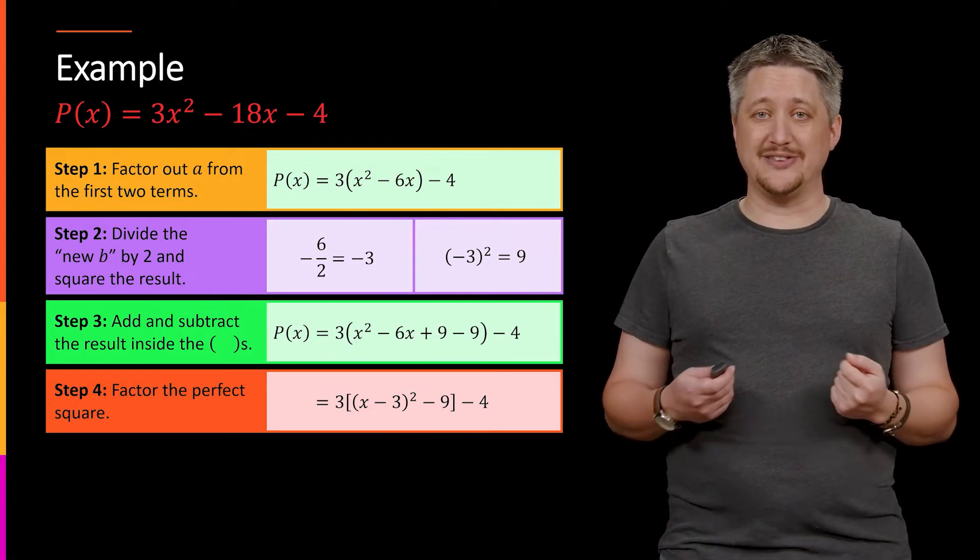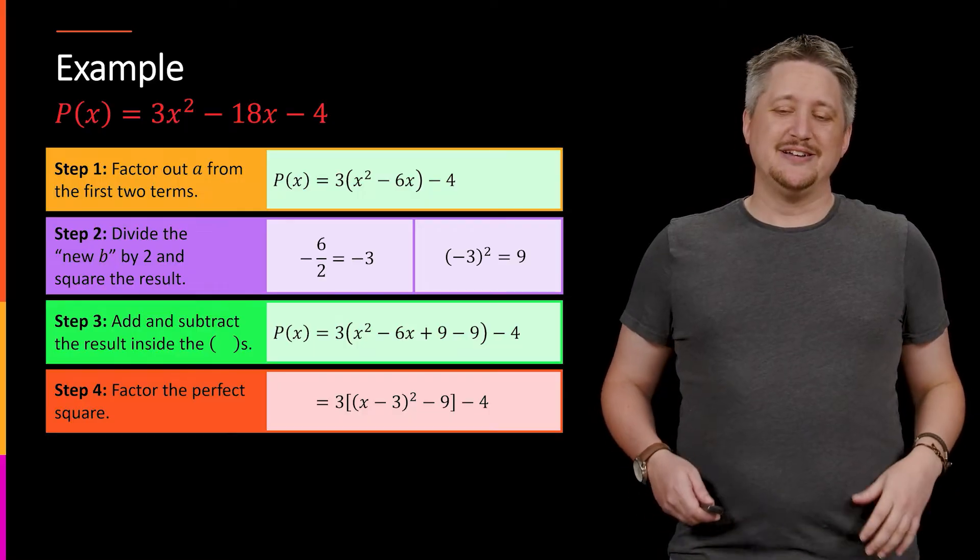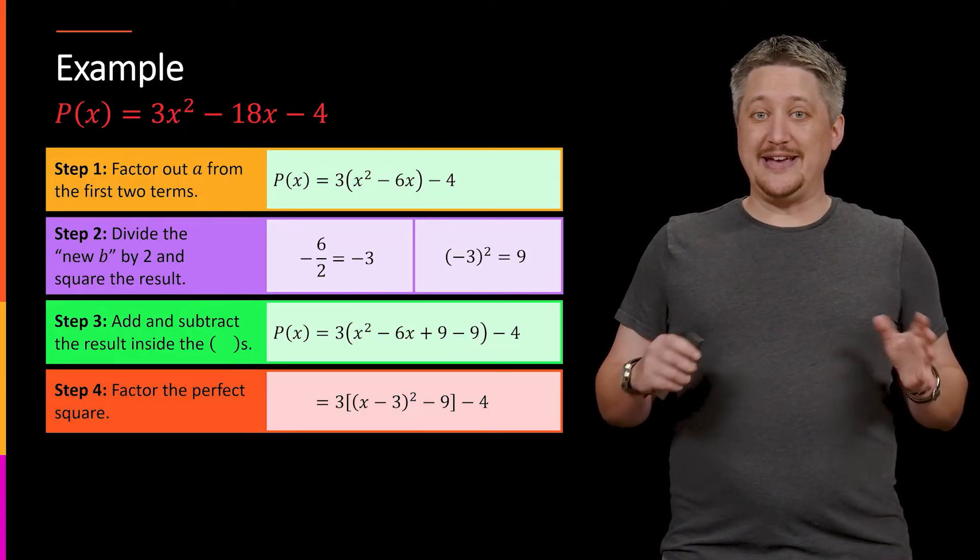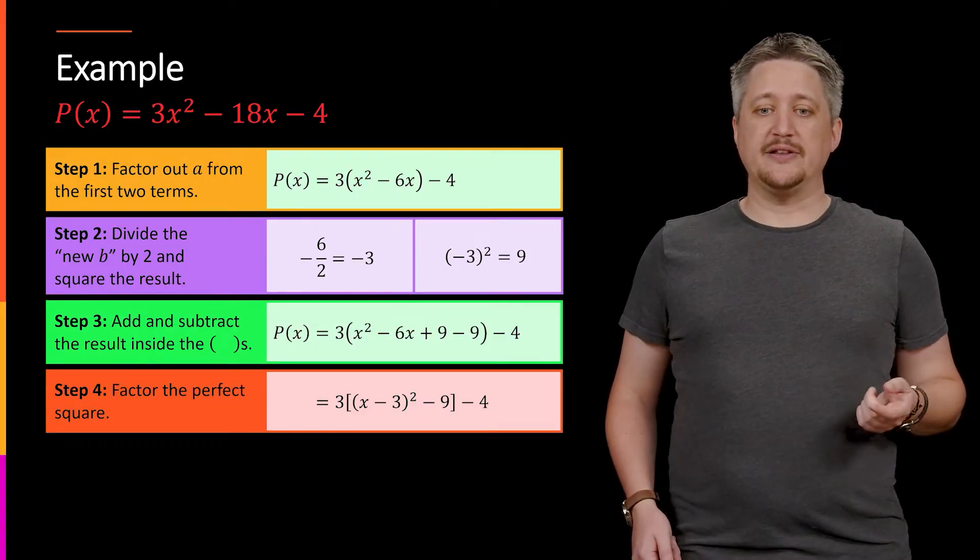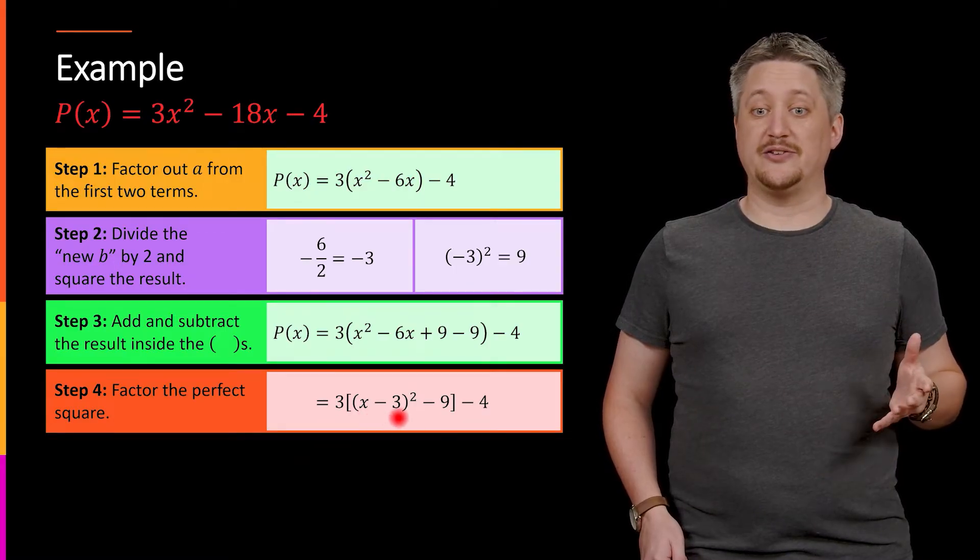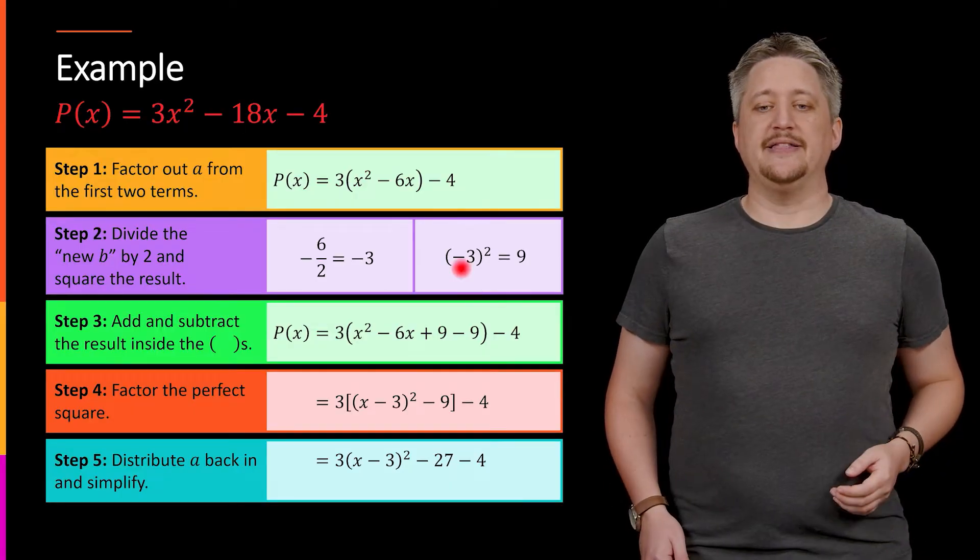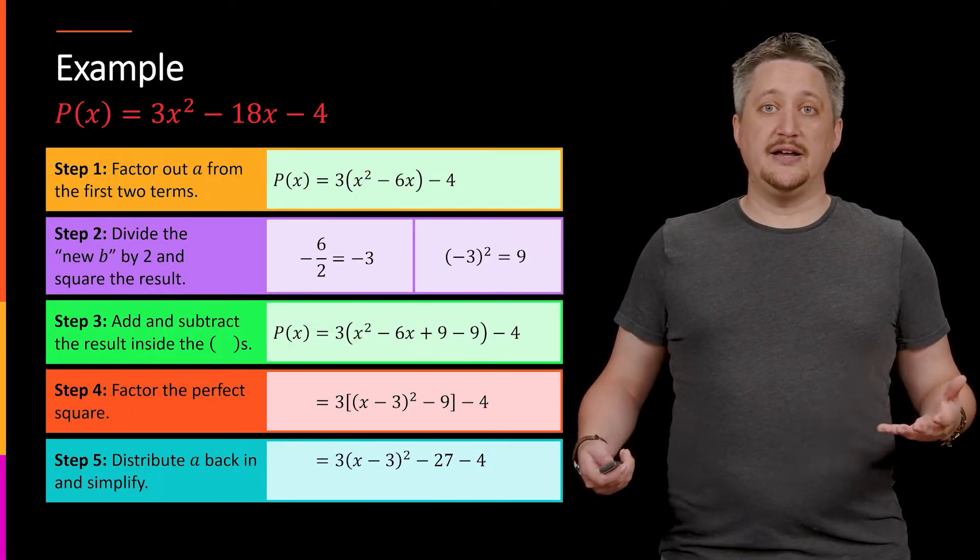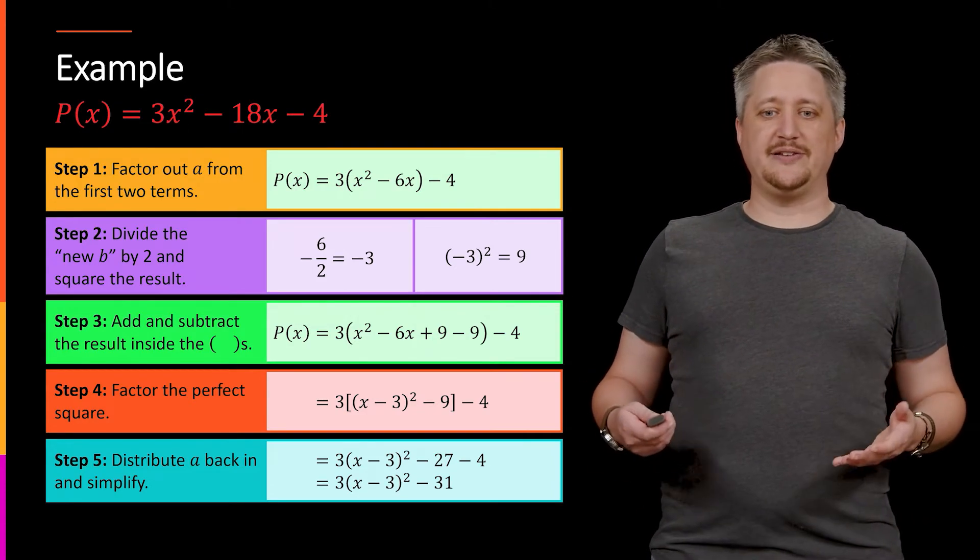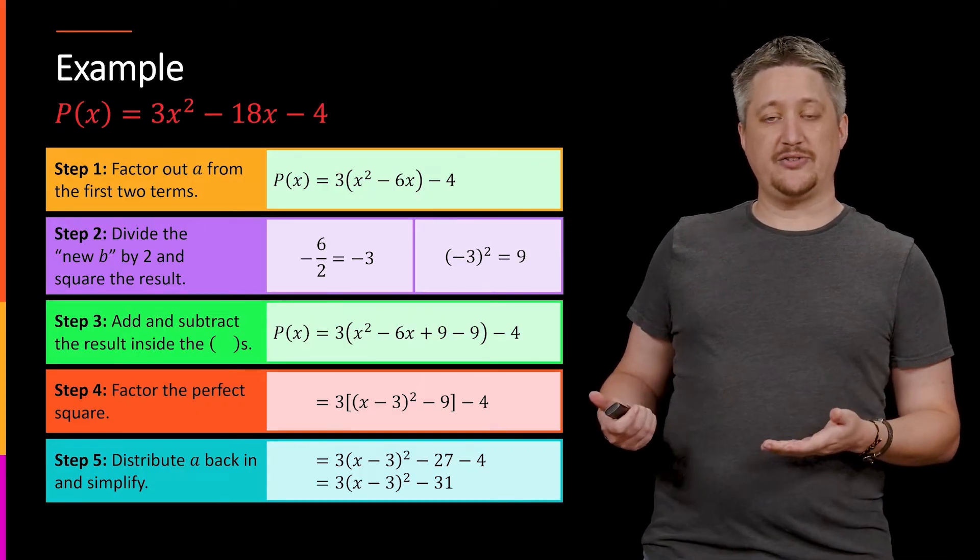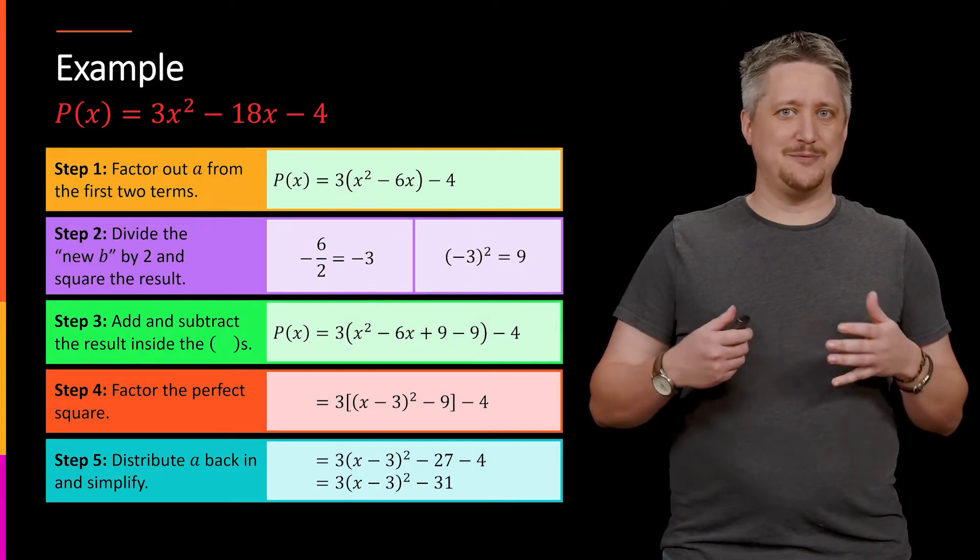Last but not least, I don't want these nested parentheses or braces or brackets. So I'm going to multiply that a term if we have one, we do here. I'm going to multiply it back out and then clean everything up. So I'm going to take that 3, multiply it against the (x - 3)² and the -9. So it's just in front of the (x - 3)² and then that 3 times -9 is -27 and then clean everything up. In particular, combining those like terms at the end there, it gets me this 3(x - 3)² - 31.